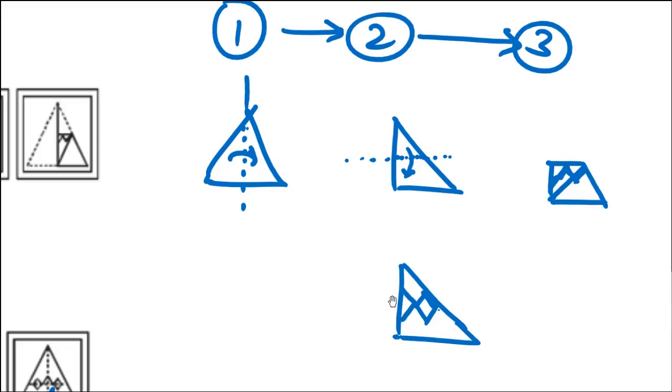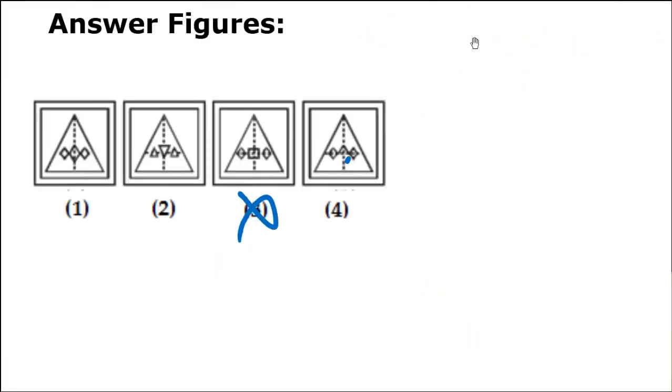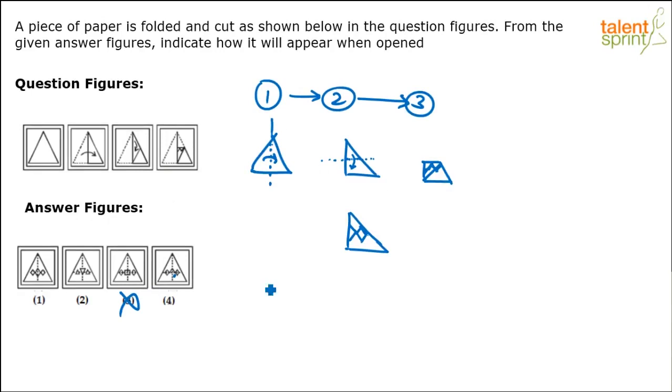But then when I look at option 2, we don't have a rhombus at the center. So option 2 is eliminated. I have a different problem. I have got it. So option 4 is eliminated. Option 2 also is eliminated. Hence option 1 is answer.